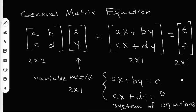So that's what a general matrix equation looks like when you're dealing with two by two coefficient matrices like A, B, C, D. And I hope that helps.